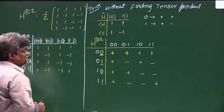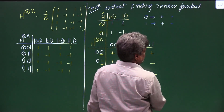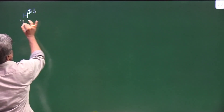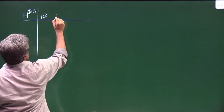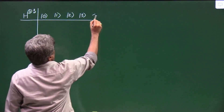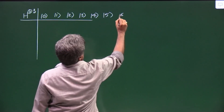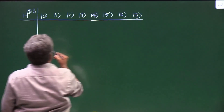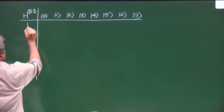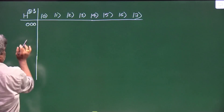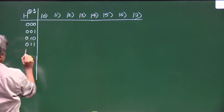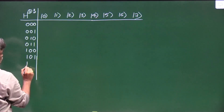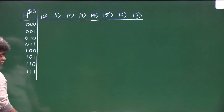Now let me take H⊗3 as an example — this would require 3 tensor products, which takes some time. Instead, we can use this technique directly. Using decimal notation, the 3-qubit basis states are 0 through 7, corresponding to binary strings: 000, 001, 010, 011, 100, 101, 110, 111. Let us apply our method to each row of the H⊗3 matrix.